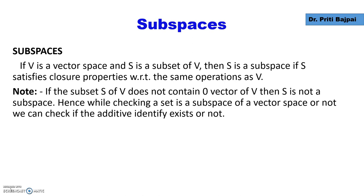Then S is a subspace. Now if we have to find whether the subset S is a subspace or not, many times it is easy to check whether S contains the zero vector of V or not — in other words, whether the additive identity exists or not.